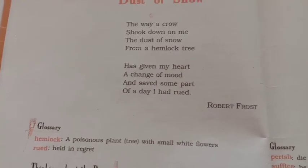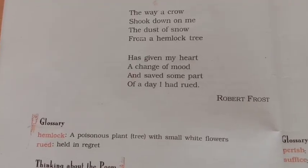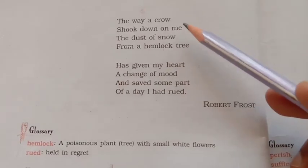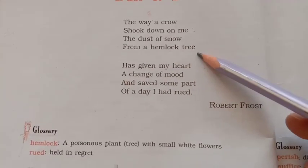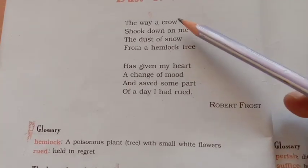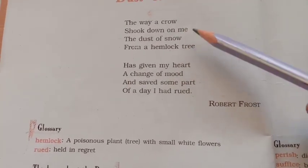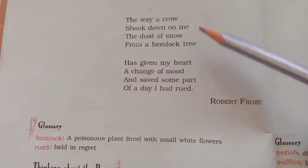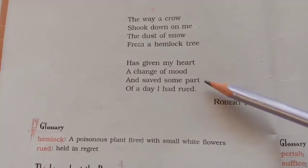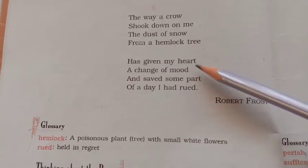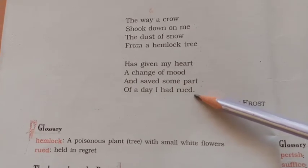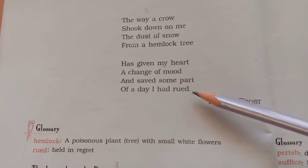Let us discuss the rhyming scheme. The rhyming scheme of the poem is A B A B C D C D. Here, 'crow' rhymes with 'snow' and 'me' rhymes with 'tree' — so that is A B A B. Then 'heart' rhymes with 'part' and 'mood' rhymes with 'rued' — so that is C D C D.